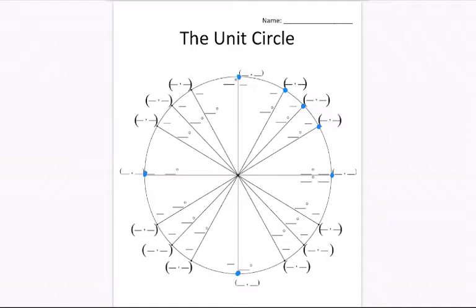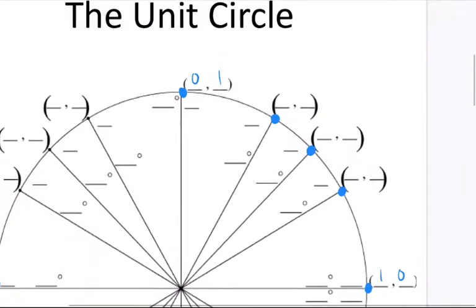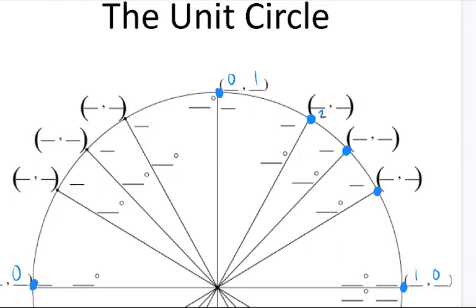And I start there because I have 1, 0, I have 0, 1, negative 1, 0, 0, negative 1. And the shortcut for these three points we talked about, but I'll say it again, every denominator is 2. And then the numerators go 1, 2, 3, 1, 2, 3, and then we square root every single numerator. But I don't need the square root of 1, do I? The square root of 1 is just 1, so I'll leave that alone.